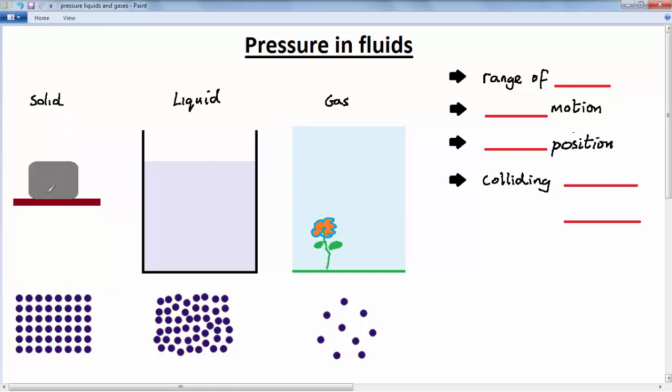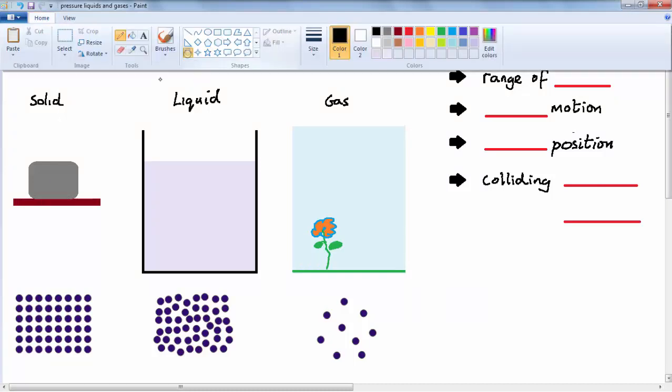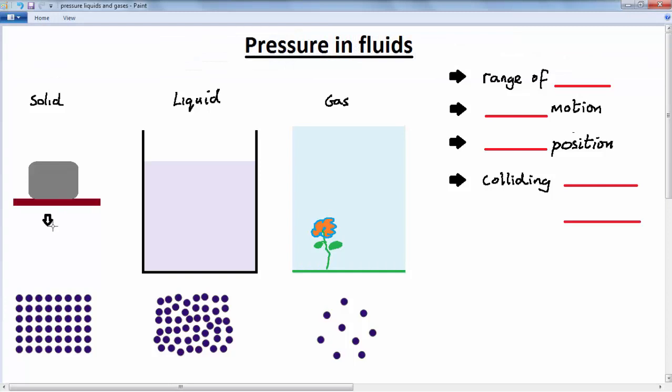Now, in the case of a solid, for example, here we have a rock sitting on top of a surface. Well, the pressure always acts in just one direction. You'll know that the force in this case, due to gravity, will be acting downwards. And the pressure produced by the rock against the surface will also act in this same direction.